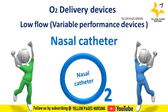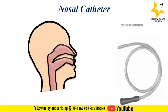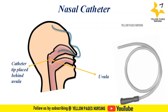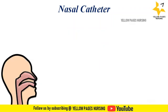Under low flow oxygen devices, next comes nasal catheter. A nasal catheter is a thin, single-lumen flexible tube which is passed through the nose and ends with its tip in the posterior part of the nasal cavity, just above the uvula. In the picture you can observe where the uvula is and where the catheter tip is placed. Nasal catheters usually come 40 cm long with open distal end and lateral eyes, and the size varies between 8 French to 18 French.